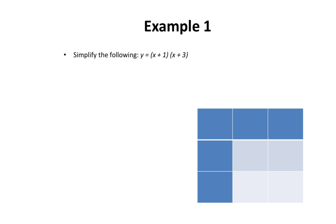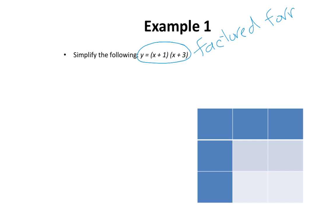In our first example, we want to simplify the following: y equals x plus 1 multiplied by x plus 3. If you recall, this is the equation of a quadratic relation, and it is a quadratic relation in factored form. My first binomial is x plus 1, and my second binomial is x plus 3.